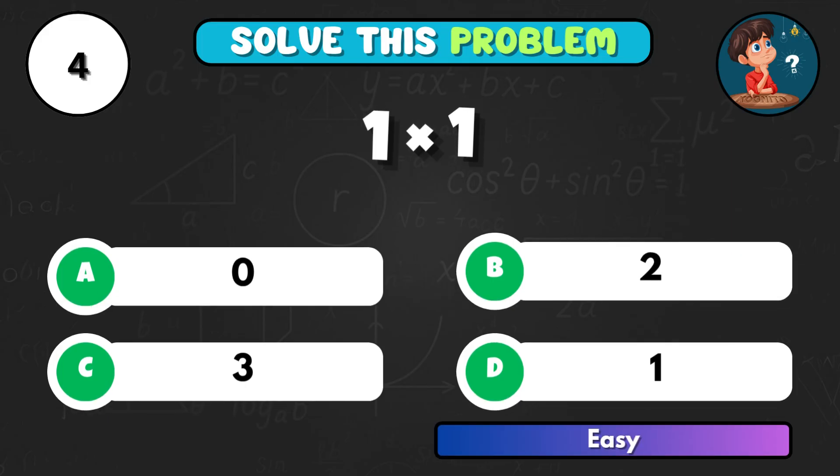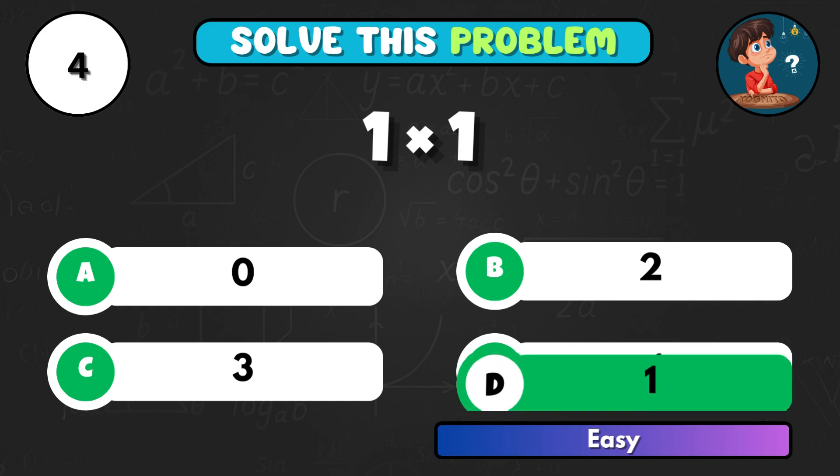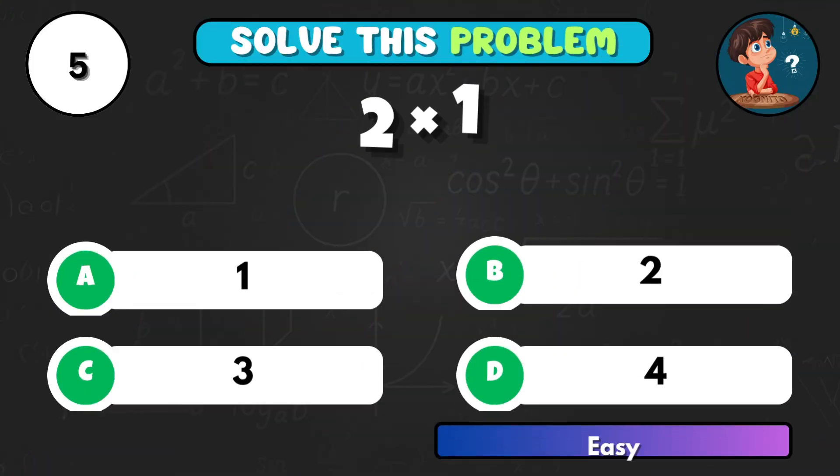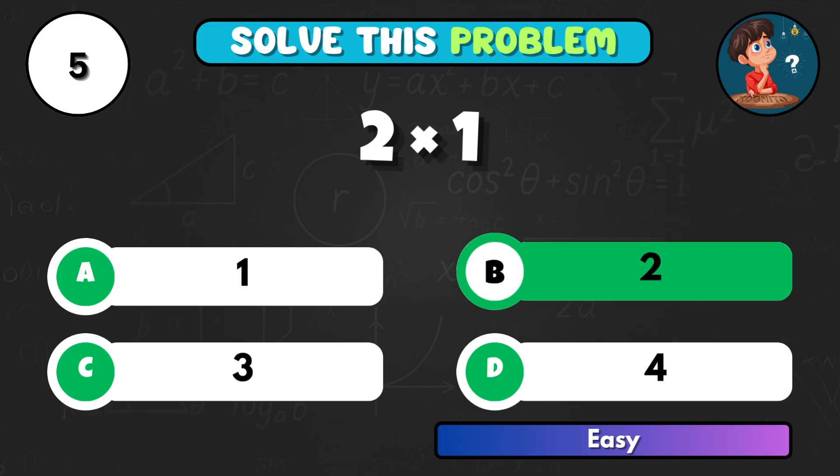Now switch it up! 1 times 1 equals 1. Right choice is D, that's 1. Let's go again! 2 times 1. Answer is B, 2.